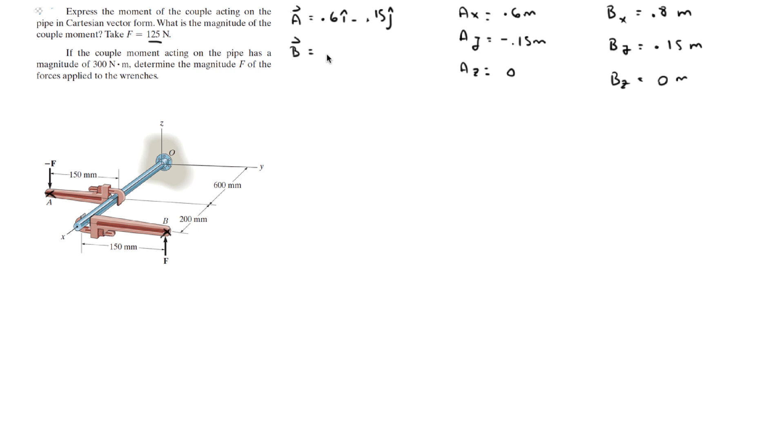So B is equal to 0.8 in the I plus 0.15 in the J. So now you need to find the vector that goes from A to B, and that is given by subtracting A from B, which gives you 0.2 in the I plus 0.3 in the J.